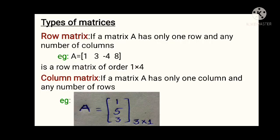Coming to the column matrix, if a matrix A has only one column and any number of rows, then the matrix is said to be a column matrix. The order of the column matrix is 3 by 1, which means 3 rows and 1 column.